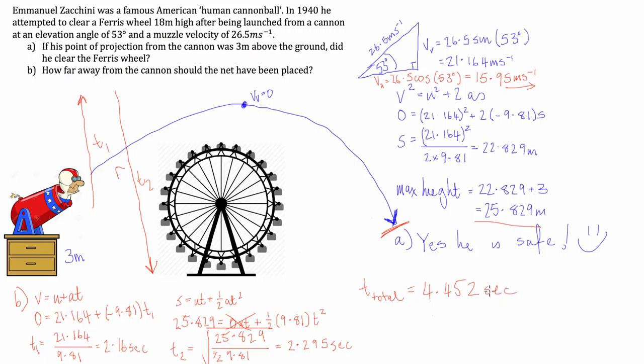Once we've got that, it's pretty simple. We take advantage of the formula s equals velocity times time. The velocity in the horizontal direction is 15.95 times the time 4.452, and that equals basically smack bang on 71 meters from the launch position.